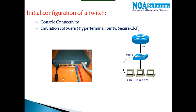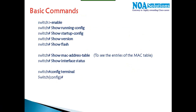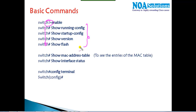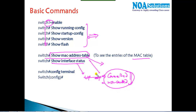For basic initial switch configuration, we do the same as with routers: connect using a console cable from the switch's console port to the computer's 9-pin port via RJ45. The modes are the same — user mode and privilege mode — and show commands are almost identical. Key commands include 'show mac address-table' to see MAC table entries, and 'show interface status' to see whether interfaces are connected, not connected, or in a disabled/shutdown state.